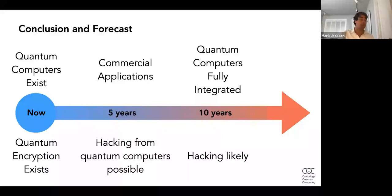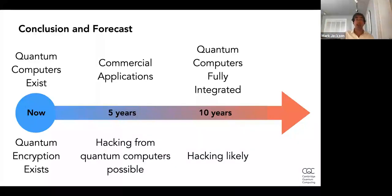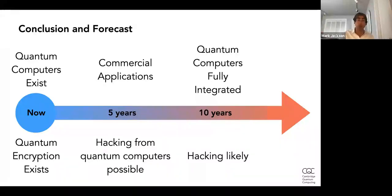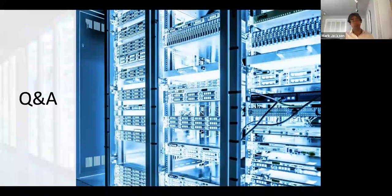To briefly conclude: quantum computers really do exist right now. I think commercial applications are at most five years away — and based on Honeywell's recent announcement, it could be much sooner. Within 10 years we will see quantum computers fully integrated into our technological infrastructure. In terms of encryption security, post-quantum encryption algorithms are already being developed, but I would encourage you to upgrade now, because hacking is possible and even likely in five to ten years. That's the end of the prepared section, but I'm happy to answer questions.